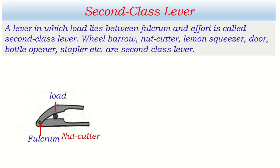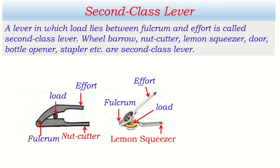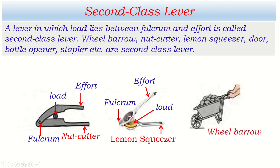Here is the fulcrum, which doesn't move, and the load is in the middle, and effort is applied at the end. That's why load lies between fulcrum and effort — that's why this is a second class lever. Now, in the lemon squeezer, the lemon is placed in the middle, effort is applied at the end, the lemon itself is the load, and this is the fulcrum at which the lever doesn't move.